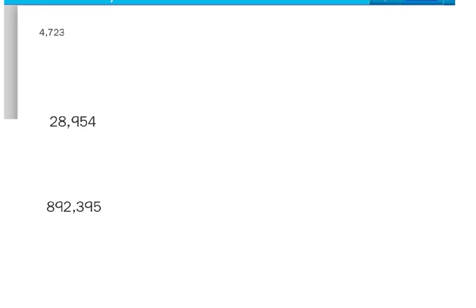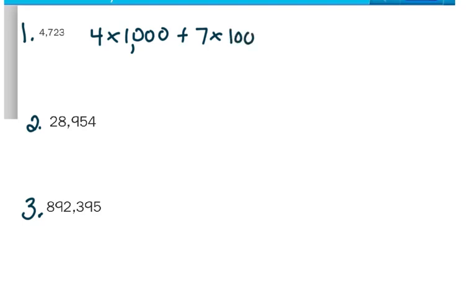On your whiteboard, I want you to take the standard notation numbers and write them in expanded form. Let me give you an example. Go ahead and number on your whiteboard: number 1, 2, and 3. We could write this several different ways — using exponents or times place value. For example, for number 1, 4,723, I could write as 4 times 1,000 plus 7 times 100 plus 2 times 10 plus 3 times 1. And if I wanted to, I could write those in parentheses.